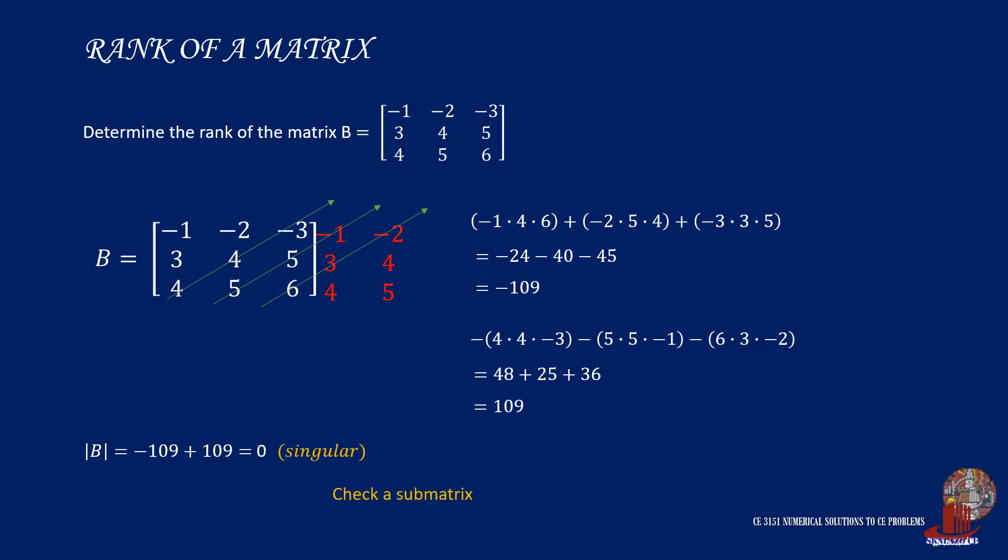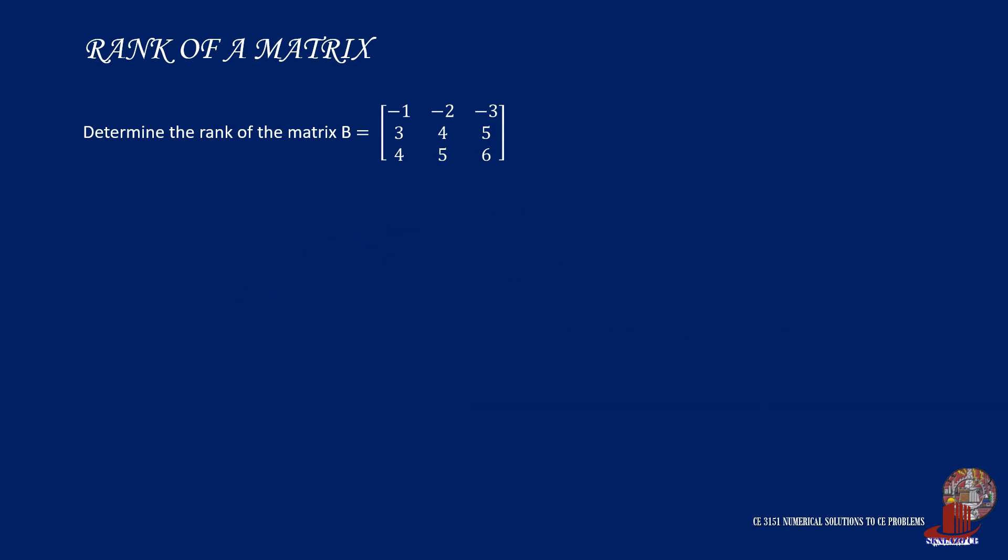The next step is to check a submatrix. In this case, take the determinant of B sub 1 as 4, 5, 5, and 6. And we have 4 times 6 less 5 times 5, which then can be simplified as 24 less 25, which results to negative 1. And this shows that B sub 1 is non-singular, so matrix B is rank 2.